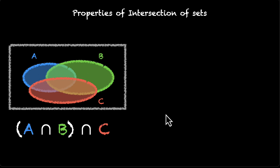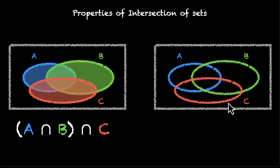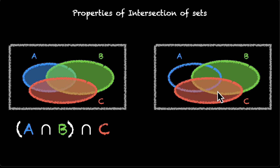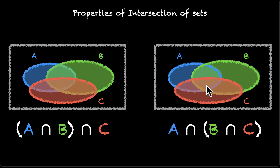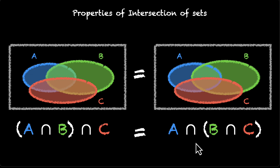If we change the order — say we first take the intersection of B and C, we get this region, and then intersect it with A — we again get this middle region. So A intersection B intersection C is the same regardless of grouping order. This is called the associative law.